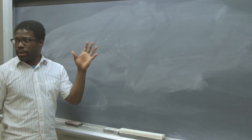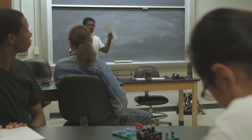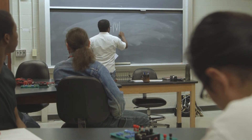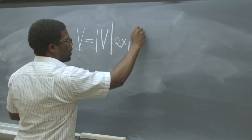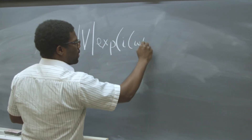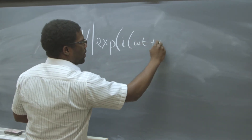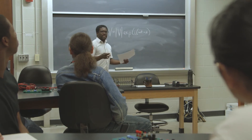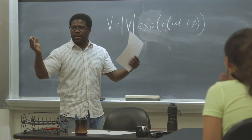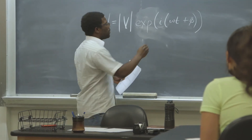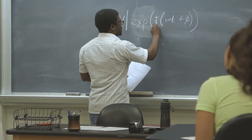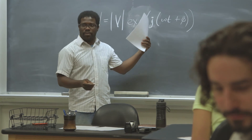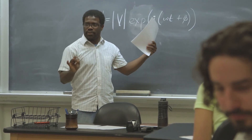Someone made a good point about one of the questions. In question two, when I have the equation written for the voltage, this 'i' here is meant to be the imaginary number. But in electronics and electric circuits, they often write J instead, and that's not confusing with the current. So this 'i' is the imaginary number, not the current.